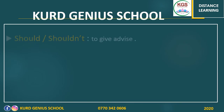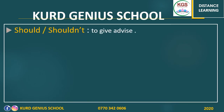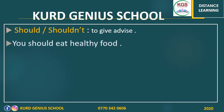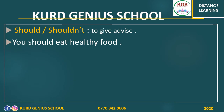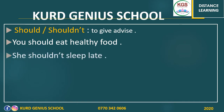In the previous lesson we covered 'should' and 'shouldn't', which we use when we want to give advice. For example: 'You should eat healthy food.' Notice the verb is in base form — no 's', no 'ed', no 'ing'. That is advice. Another example: 'You shouldn't sleep late' — another piece of advice, in the negative.